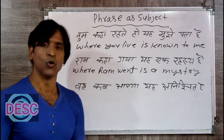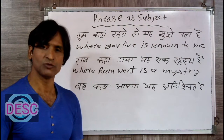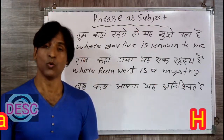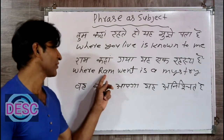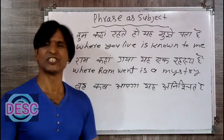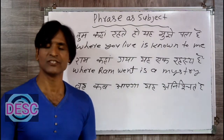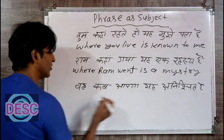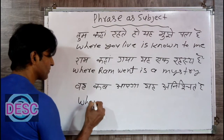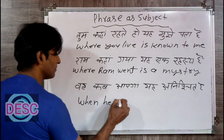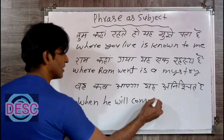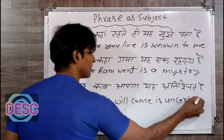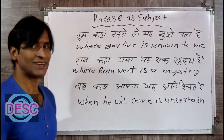Where did Ram go? — that form is wrong here. The right way is: Where Ram went is a mystery. Wa kab aayega ya anishchit hai — when he will come is uncertain. This form using question order is wrong; the correct form uses positive sentence order.